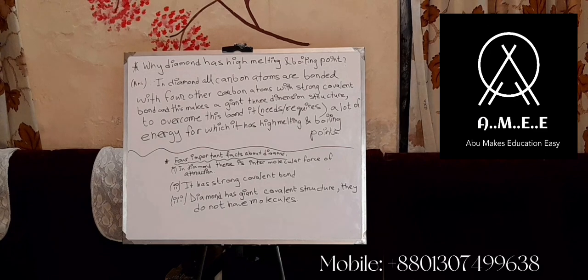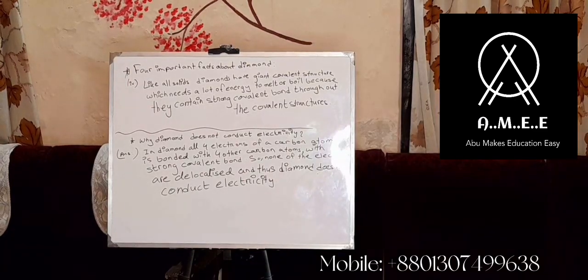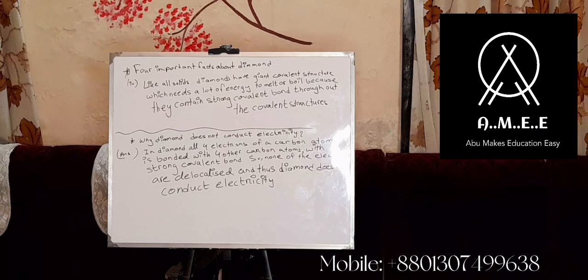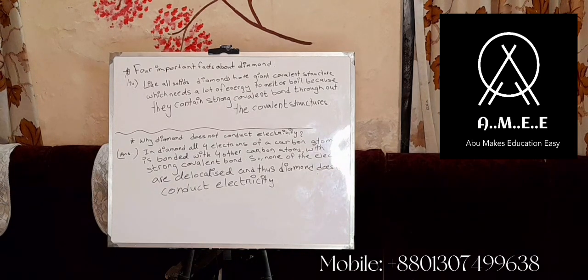The fourth important fact about diamond is that, like all giant covalent solids, diamond has a giant covalent structure which needs a lot of energy to melt or boil, because it contains strong covalent bonds throughout the entire structure.